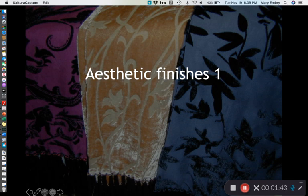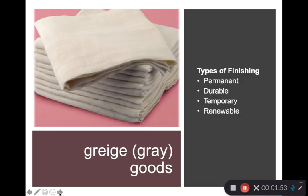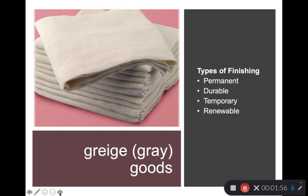An unfinished textile is called a gray good — a textile that doesn't have any dye or finishing process yet. Muslin in your swatch kit is a great example of a gray good or unfinished product. When we talk about finishes, we'll also discuss the durability of them — the time that they last on a product.